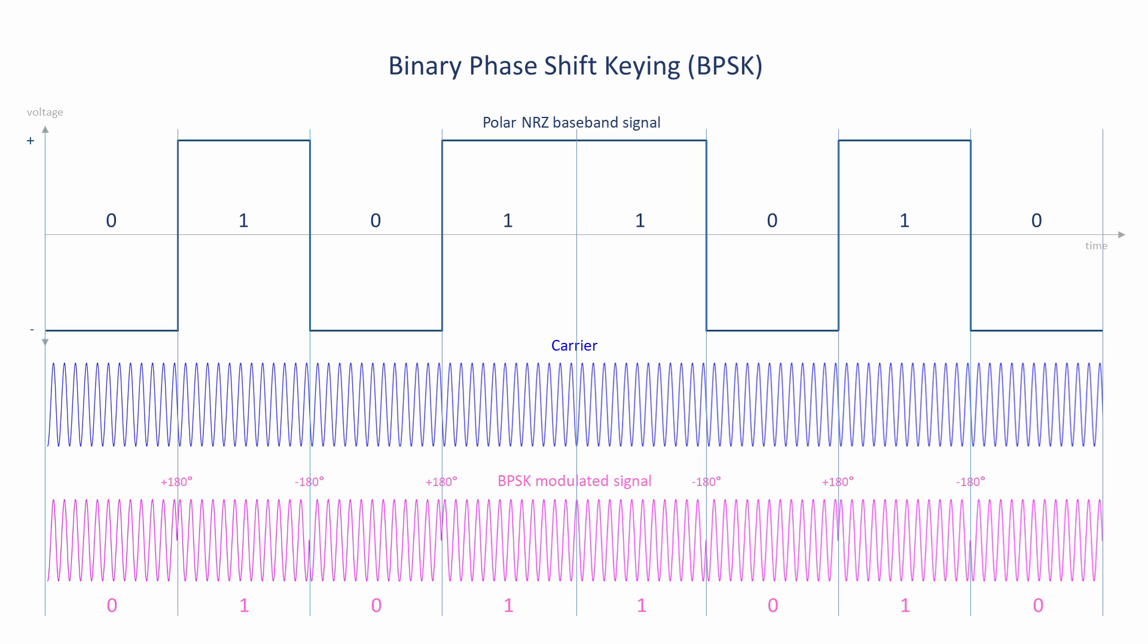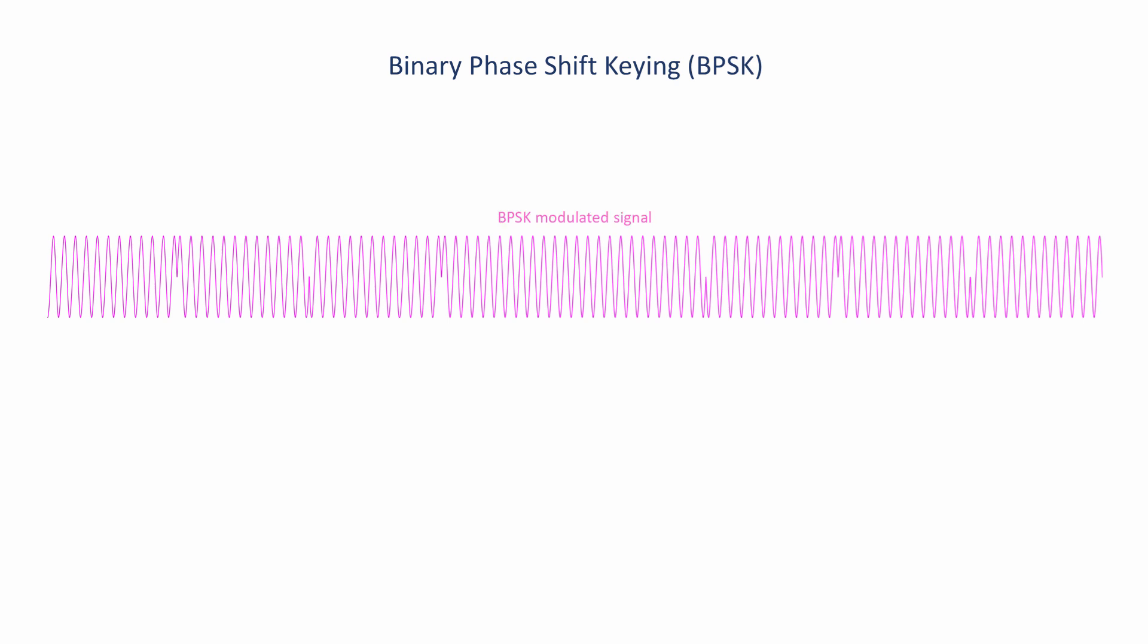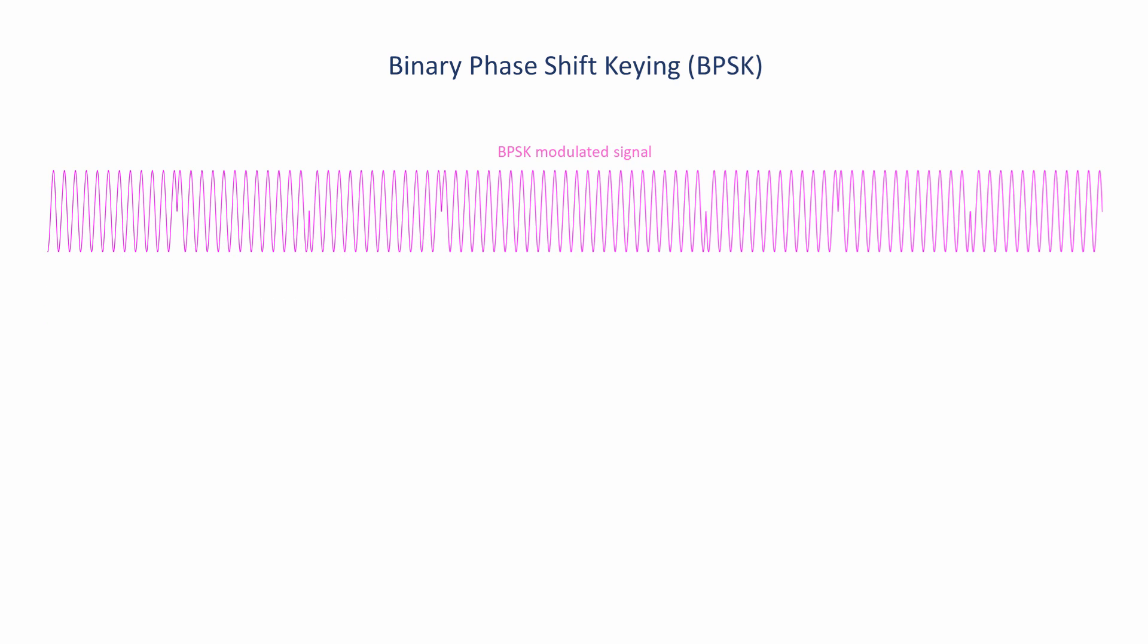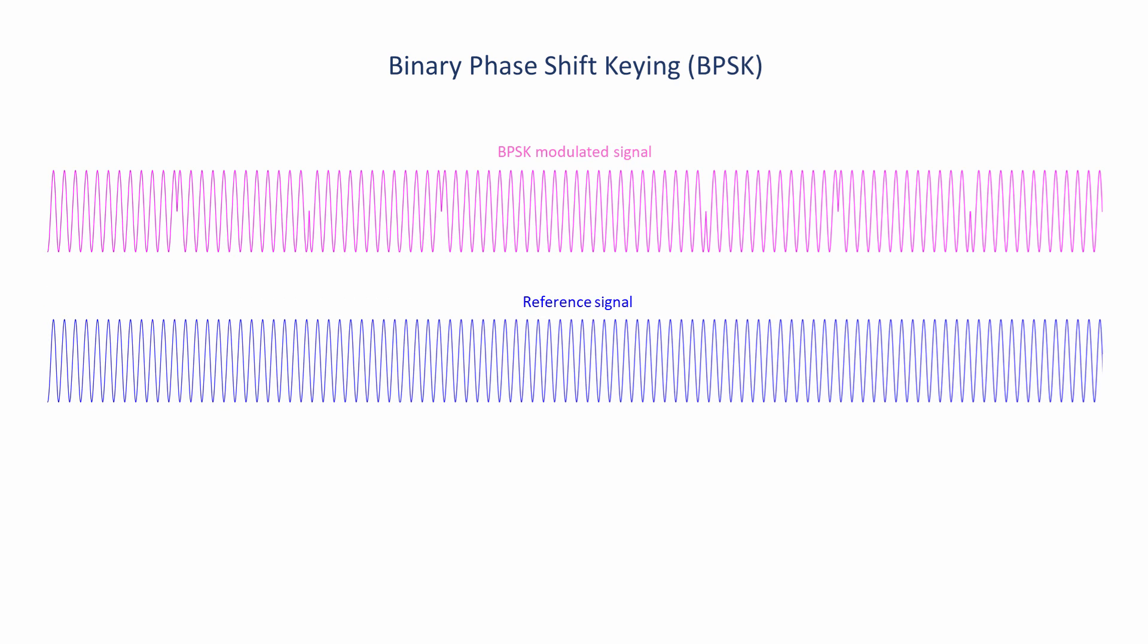At the receiver, the modulated wave is converted back into binary digits. The receiver does this by comparing the phase of the received signal with a locally generated reference signal, which is identical to the original carrier.